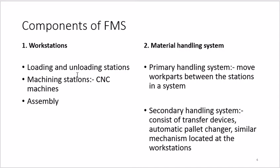The secondary handling system consists of transfer devices, automatic pallet changers, and similar mechanisms located at the workstation. Besides movement between machines, there is material handled onto the machine itself — like pallet change, where one component is complete and the next is loaded. Loading the job into the machine and unloading the finished part is called secondary handling. Primary is movement between machines; secondary is handling within the machine.